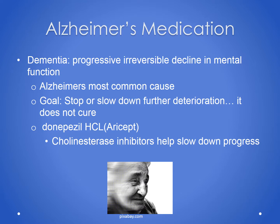Dementia is a progressive, irreversible decline in mental function, and Alzheimer's disease is the most common cause. The goal of treatment is to prevent or slow down further deterioration, but there is no cure. Donepezil hydrochloride, or Aricept, is one of the drugs used for this disorder. Patients with Alzheimer's have a loss of up to 80% of their cholinesterase by the time they're diagnosed. Donepezil is a cholinesterase inhibitor and is showing promise in slowing down the progression of the disease.